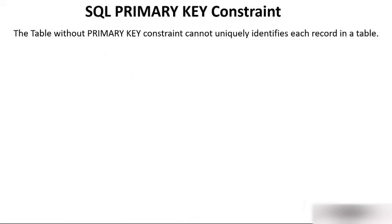A table without a primary key constraint cannot uniquely identify each record in a table. It's very obvious. Suppose there is a table and there is no primary key — you cannot identify any tuple uniquely, because if there is no primary key there could be duplicate values, there could be null values, and in that case you could not uniquely identify a tuple.